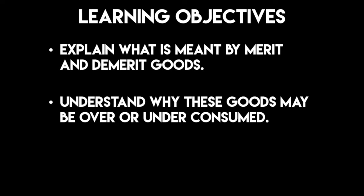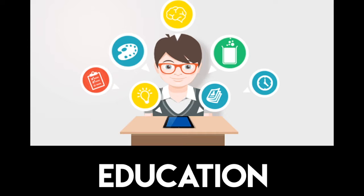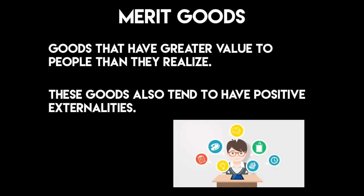In this video, you're going to take a look at what is meant by merit and demerit goods, and then you're going to take a look at why these goods may be over or under consumed. Education is considered a merit good because it gives more benefits to the individual who consumes it than they actually realize at that time. Merit goods generally have greater value to people than they realize, and they generate positive externalities.